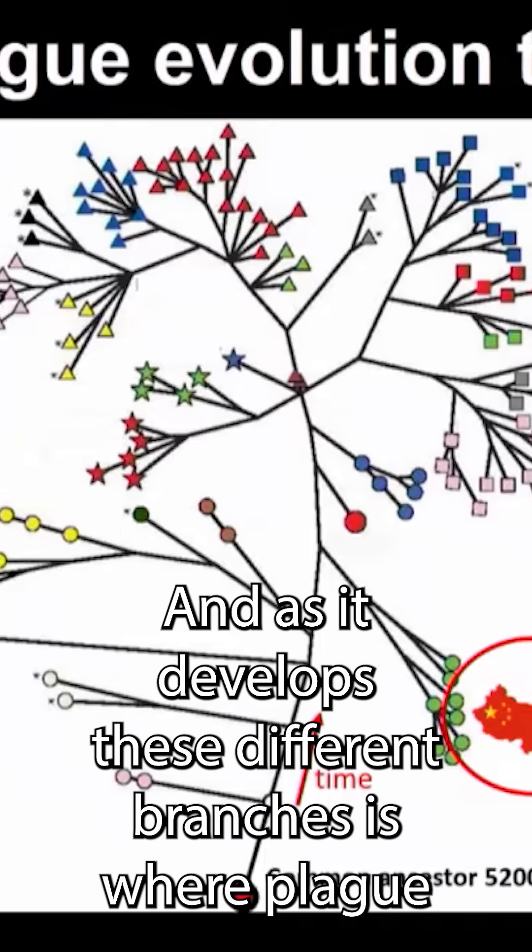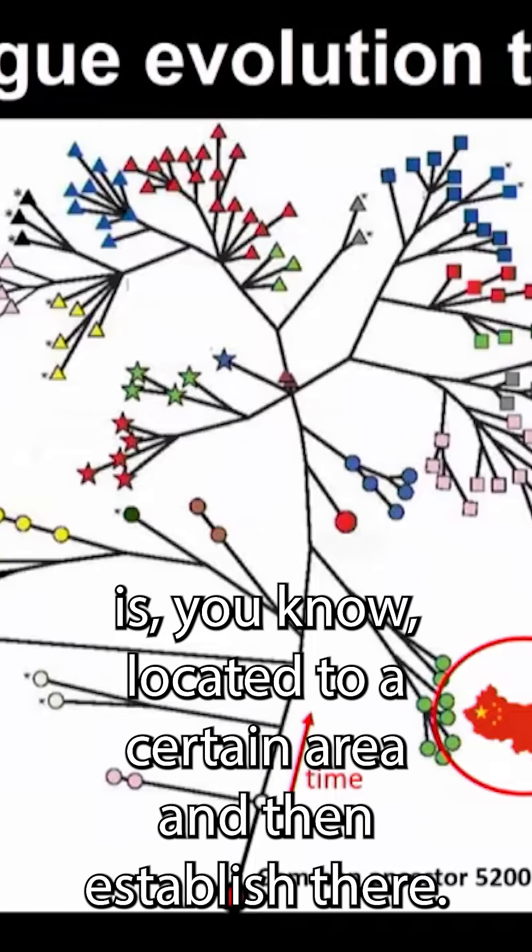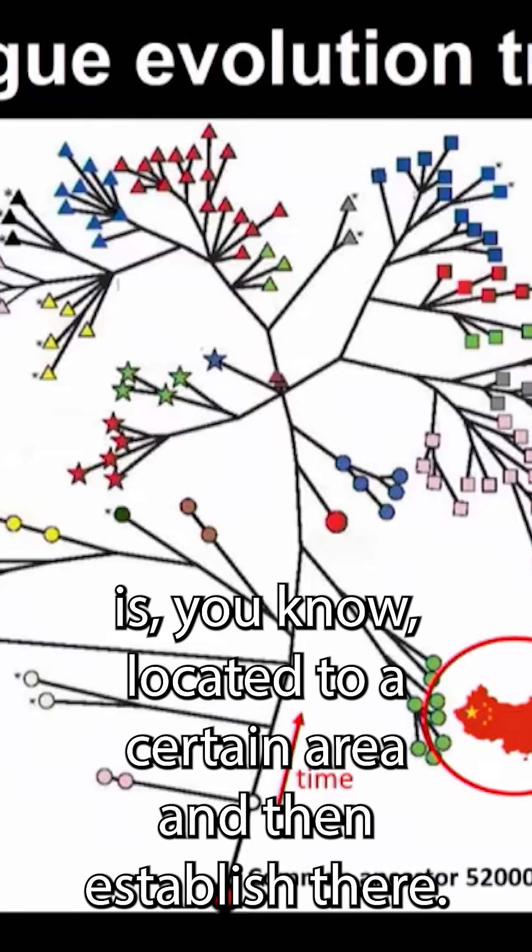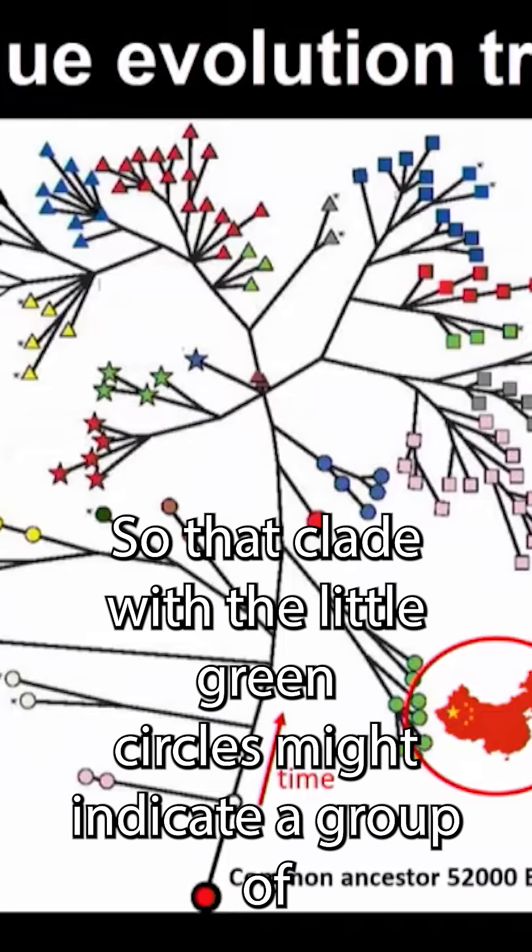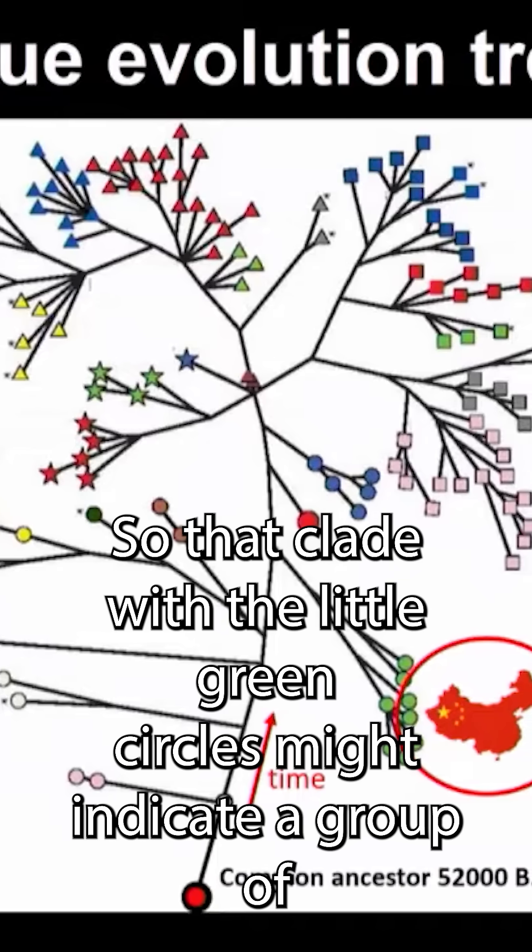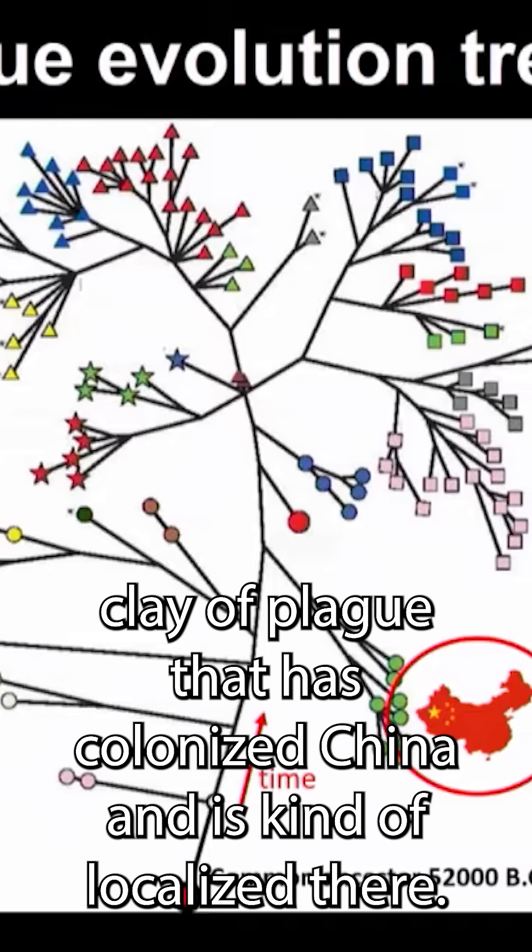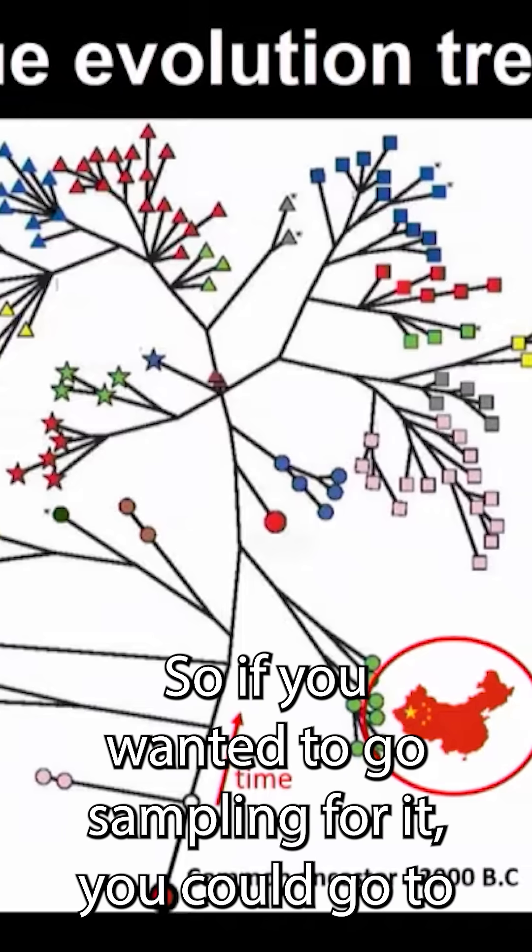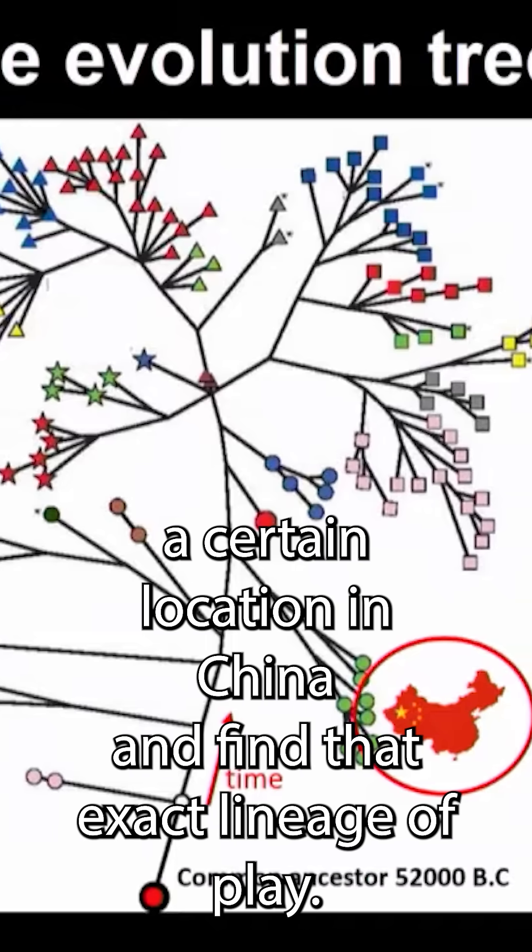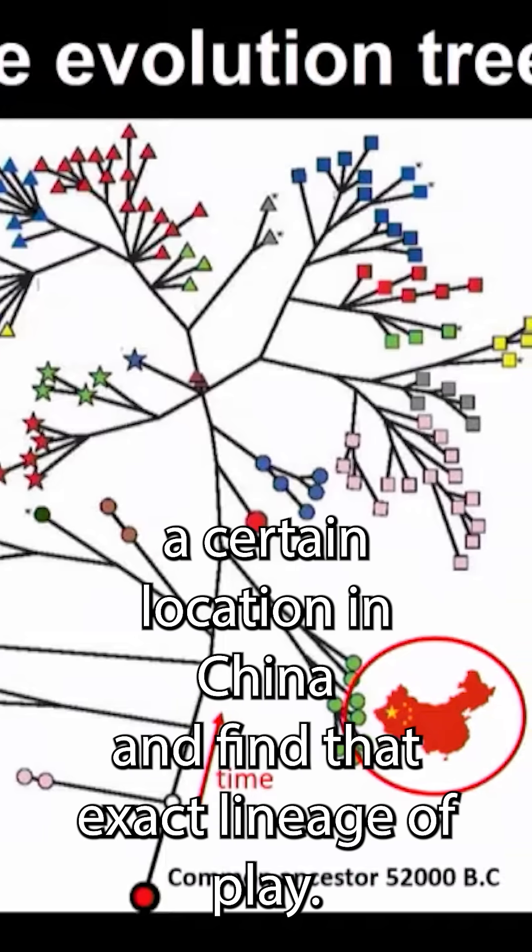As it develops these different branches is where plague is located to a certain area and then established there. So I circled a figure of China. That clade with the little green circles might indicate a group of plague that has colonized China and is kind of localized there. So if you wanted to go sampling for it, you could go to a certain location in China and find that exact lineage of plague.